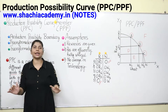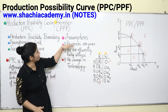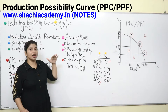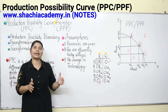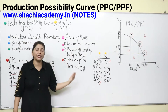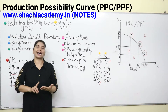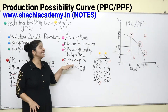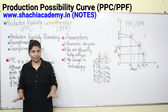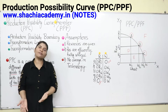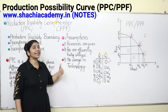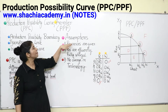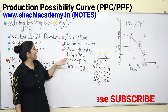Before discussing the graph, we need to see the assumptions. Any theory cannot work without assumptions. First, resources are given — for every economy, resources are given and fixed, like land, labour, and capital are fixed. Second, resources are efficiently and fully utilized — none of the resources in the economy are lying idle, there is no unemployment. Third, no change in technology — the level of technology remains constant. Because if technology increases, production will increase automatically, so we keep technology at a constant level.